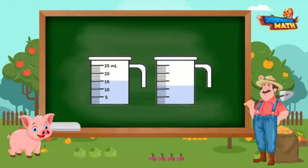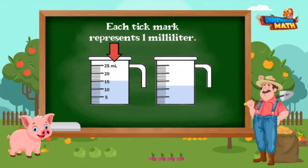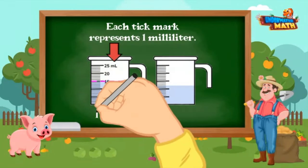Let's see how many milliliters of water we need to make applesauce. There are two containers here. The unit of measurement is milliliters. Each tick mark represents one milliliter and it has every five milliliters numbered. We can see that there are 15 milliliters in the first container.